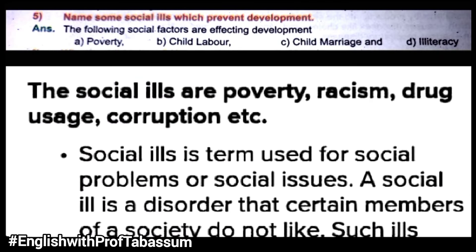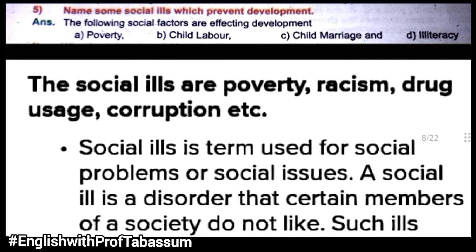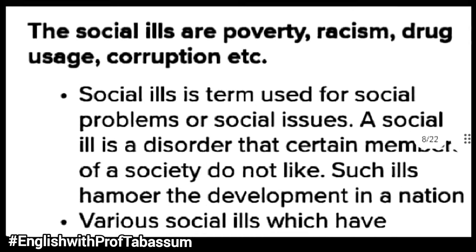Name some social ills which prevent development. Social ills are those things that stop development. First is poverty — when you are poor, you don't get education, proper sanitation, health facilities, or basic facilities. Second is child labor — when children are put to work. Third is child marriage — when marriage happens in childhood. Fourth is illiteracy — when people don't receive education. You have to elaborate on these 4 points under side headings in your own words.